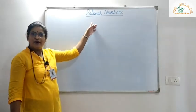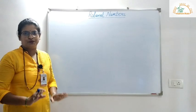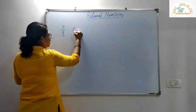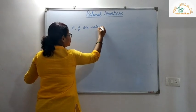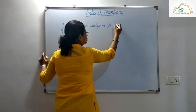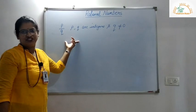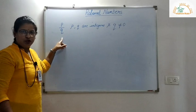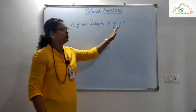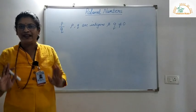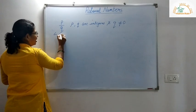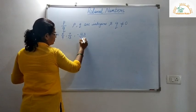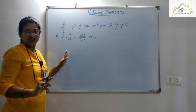Now we move on to rational numbers. A number which can be expressed in the form P upon Q, where P and Q are integers and Q is not equal to 0, is called a rational number. For example, 5 upon 9, 7 upon 13, minus 163 upon 117, etc. — all these are rational numbers.